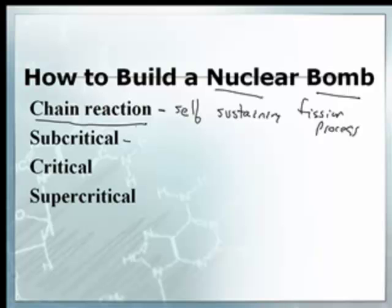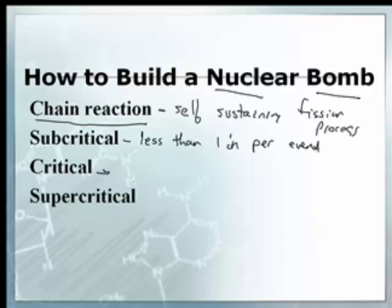Subcritical is when we've got less than one neutron causing another fission event. Critical is when we have exactly one neutron per event, producing again another neutron.